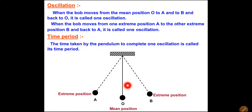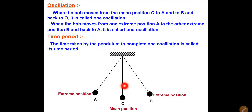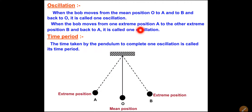Position A and position B are the extreme positions and O is the mean position. If you take the bob to the A side and release it, the bob goes from A to O, O to B, then back B to O, and O to A - at that point one oscillation is completed. So when the bob moves from one extreme position A to the other extreme position B and back to A, that is called one oscillation. If it moves only from A to B, one oscillation is not completed - it must return to A.